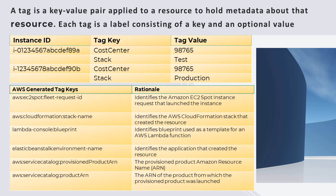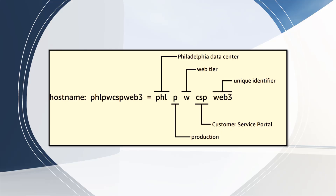You can take a structured approach to the naming of resources, but a resource name can only hold a limited amount of information. Here in this diagram, you'll notice the best way to tag AWS resources, where you have the host name divided into the data center, the environment — whether it's production, dev, or QA — followed by the web tier, the customer service portal, and finally a unique identifier. EC2 instances have a predefined tag called Name that provides similar functionality.